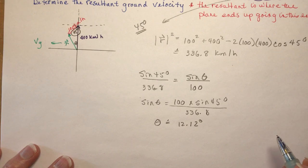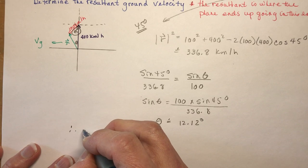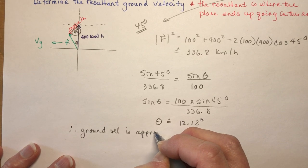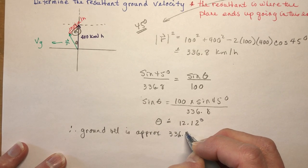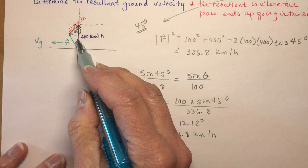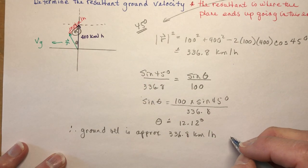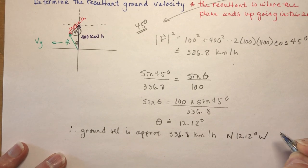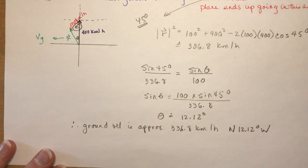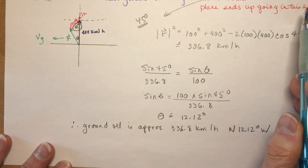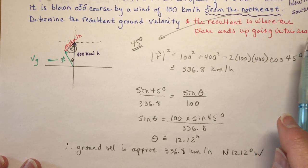Therefore, the ground velocity is approximately 336.8 kilometers per hour, at north 12.12 degrees west. Make your little diagrams and think about what the resultant is. In this case, the resultant is where the plane ends up going — it was blown off course by the wind.